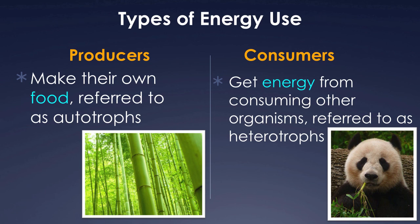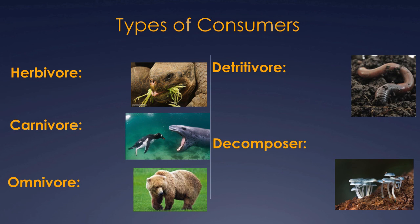Consumers get their energy from consuming other organisms and are known as heterotrophs — 'hetero' meaning different, as they get their food from different sources. An example of a consumer is us — we obviously can't just stand out in the sun and feel full. There are many different types of consumers: herbivores, carnivores, omnivores, detritivores, and decomposers.